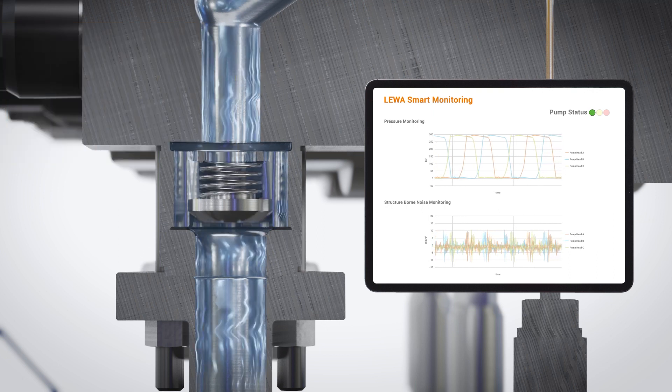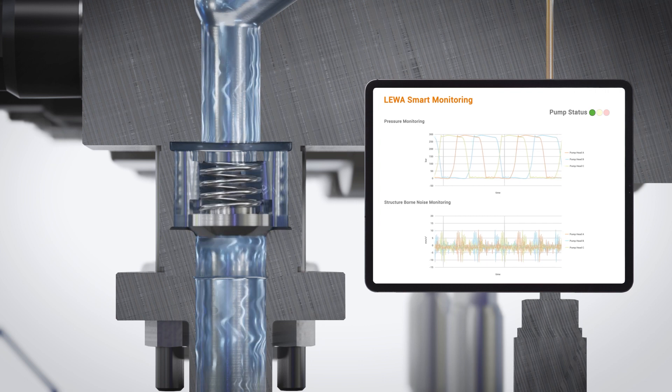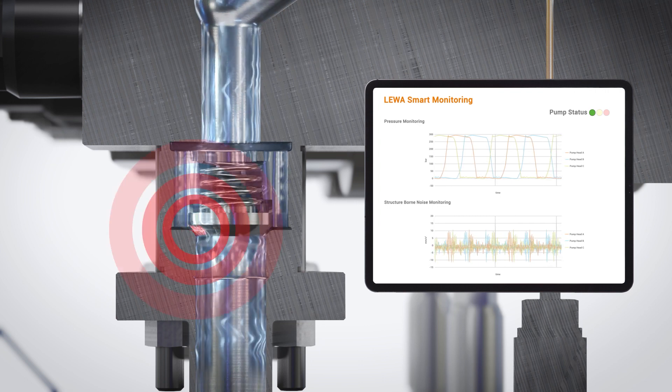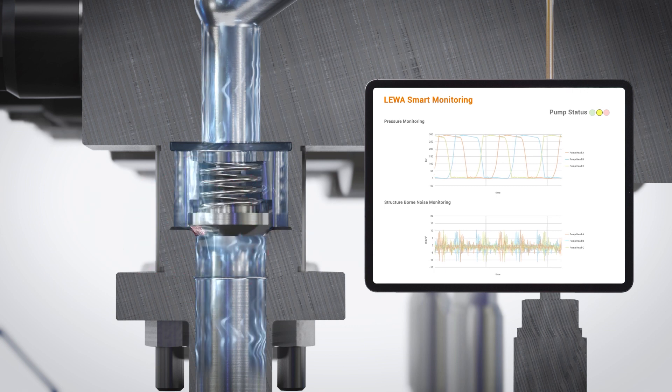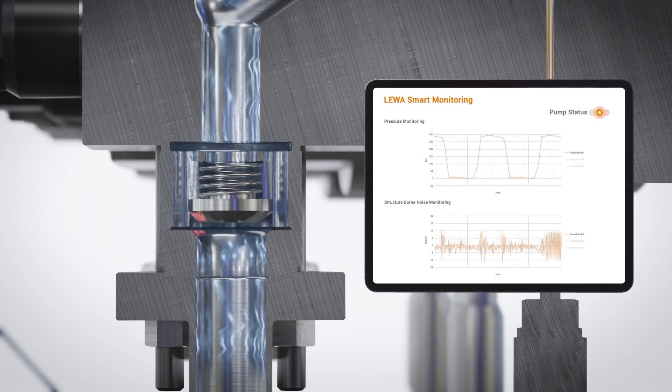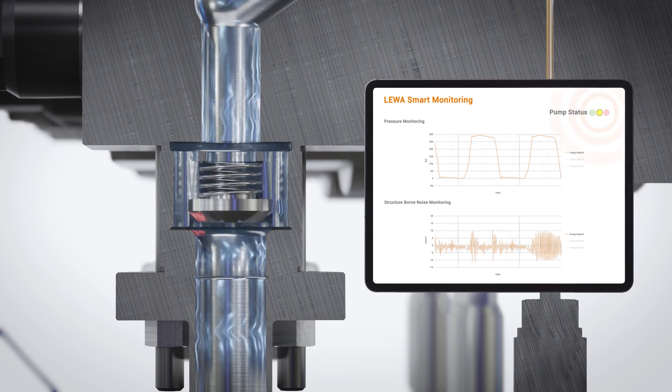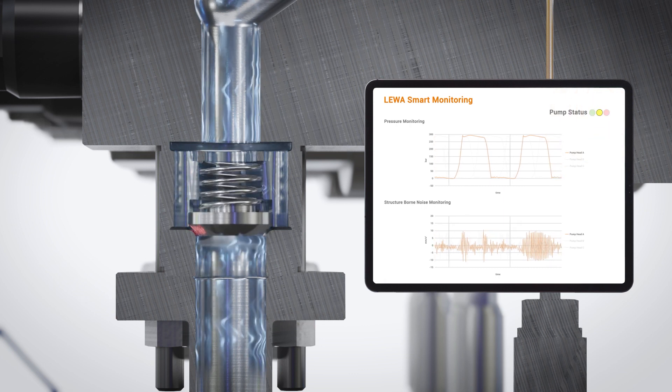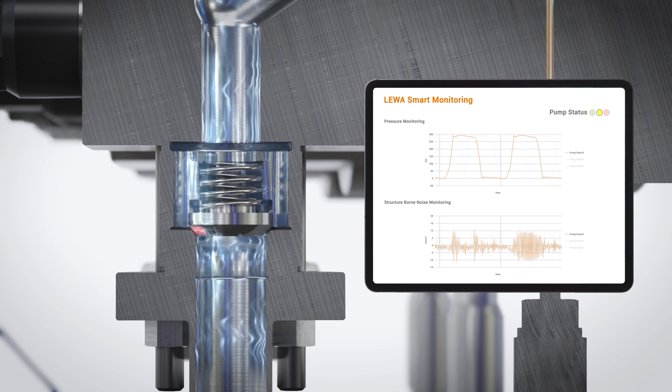Let's take the monitoring of fluid valves as an example. Before wear becomes noticeable due to the loss of volume flow in the process control system, it can be detected preventatively by Liwa Smart Monitoring. This diagnosis enables easy failure localization and planned maintenance instead of unplanned shutdowns.